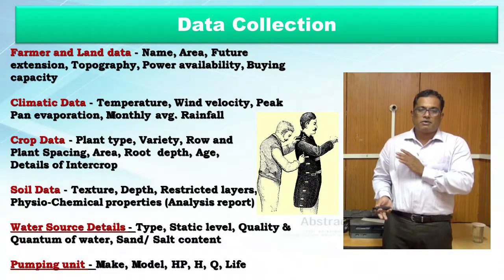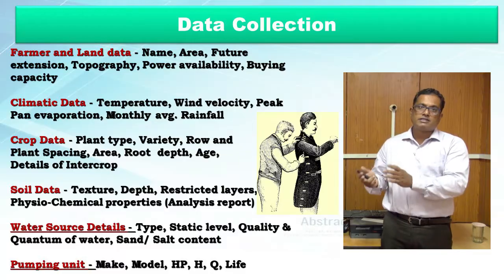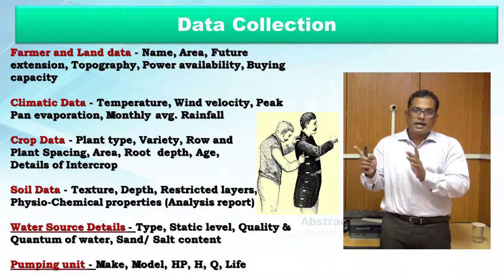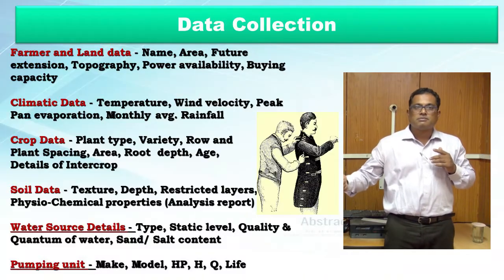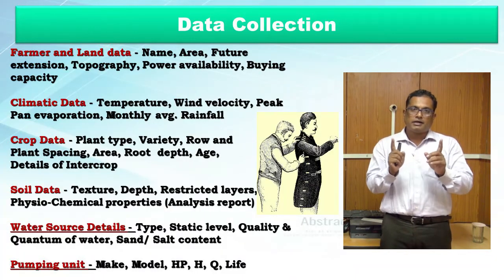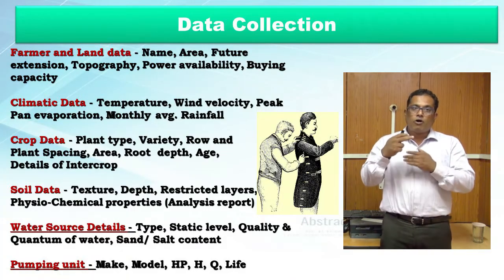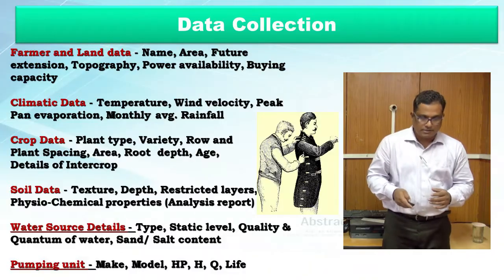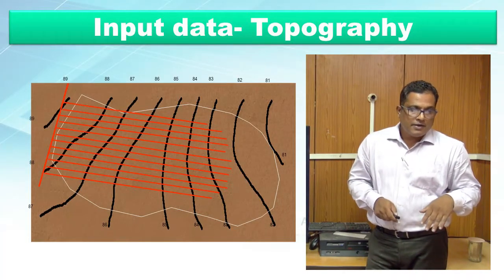Pump selection requires knowing the required HP, which is typically 2, 3, or 5 HP. This depends on the discharge needed and, more importantly, the depth from which water must be lifted. The head-discharge relationship must be considered: higher head means less discharge, and lower head means more discharge. When consulting a pump supplier, the designer must specify both the required head and the discharge requirement.